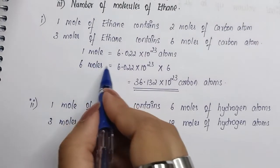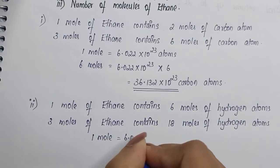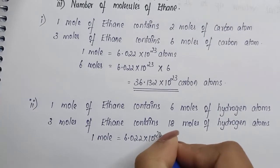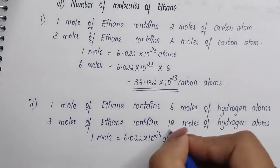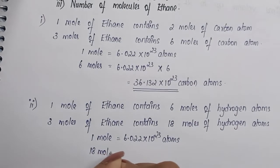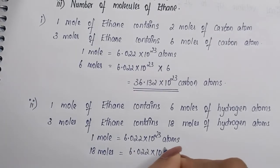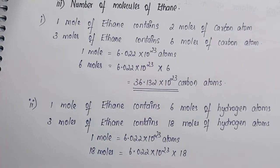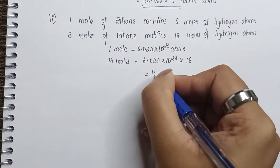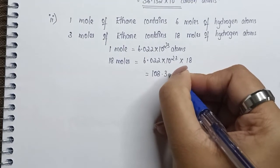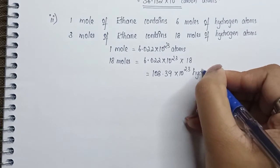One mole is equal to 6.022 × 10²³ atoms, since our question is asked in terms of atoms. Therefore, 18 moles is equal to 6.022 × 10²³ into 18, which equals 108.39 × 10²³ hydrogen atoms.